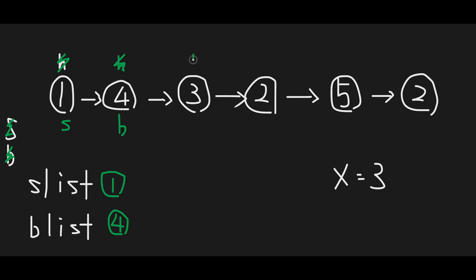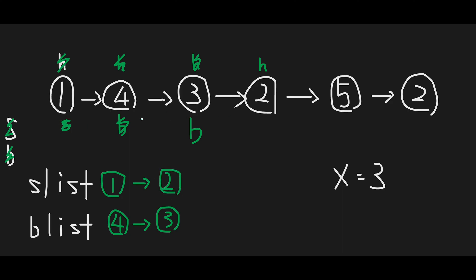We update the big dummy pointer to 4, then move head to next. Then we find 3. Since 3 is equal to x, we add 3 to the big list — so big list is now 4, 3. We update the big list pointer. Then head moves next and we find 2. Since 2 is less than 3, we add 2 to the small list.